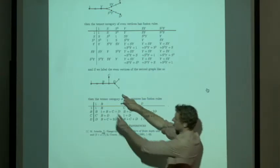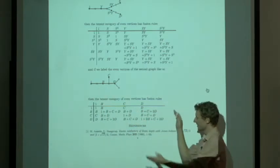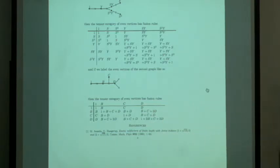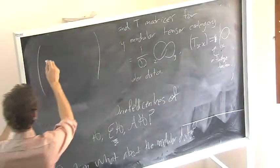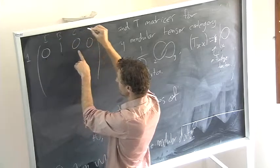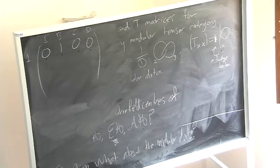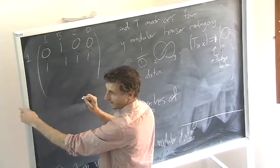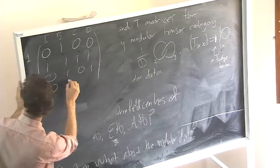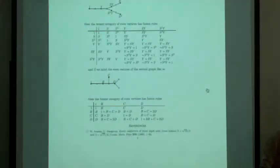So we have four objects: 1, B, C, and D — the simple objects of some fusion category. I'll write down the matrix that encodes multiplication by B. When I multiply the identity by B, I get B itself: 0,1,0,0. B squared gives one copy of everything: 1,1,1,1. B times C gives B plus D: 0,1,0,1. And B times D gives B plus C plus 2D: 0,1,1,2. This is one of the matrices encoding the fusion ring.